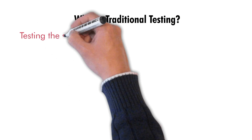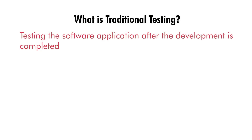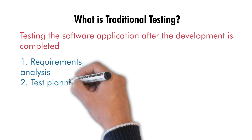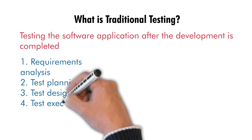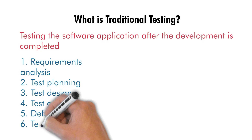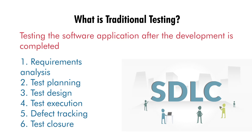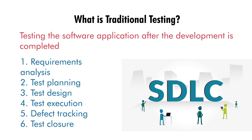First of all, let's understand what is our traditional software testing process. The traditional method of software testing involves testing a software application after the development. It typically involves requirement analysis — understanding the requirements of software and documenting them — then test planning, which involves developing a test plan that outlines the testing approach, test cases, test data, and test environment.